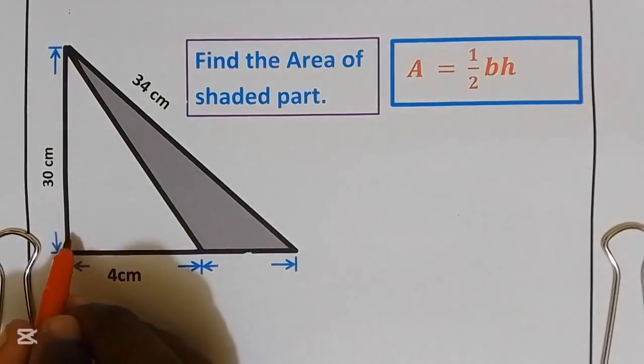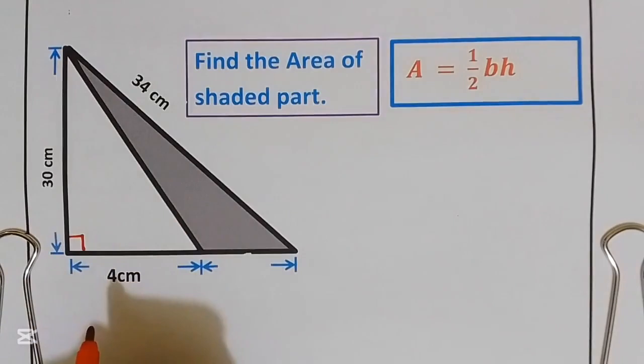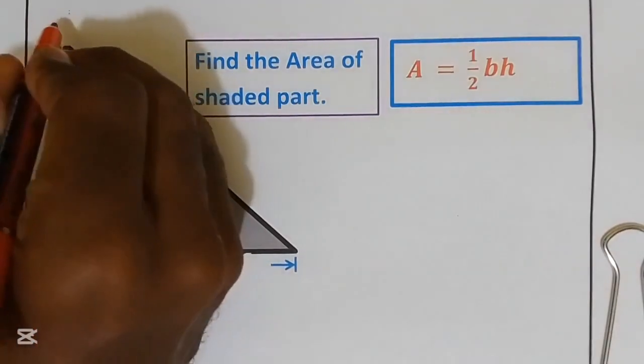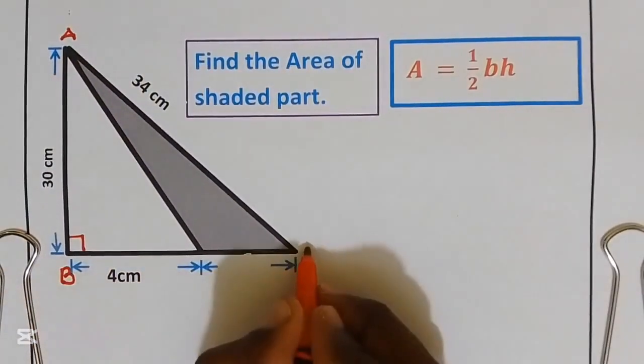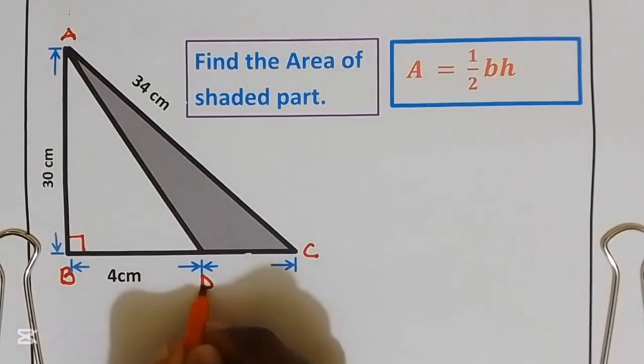This is the right-angled triangle. Let us put letters so we can easily name our triangle. Let's call this point A, this B, C, and D.